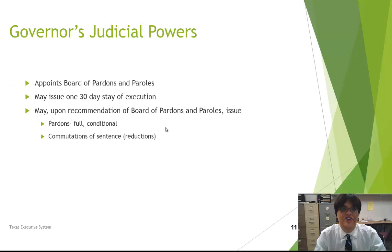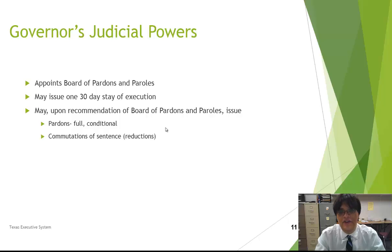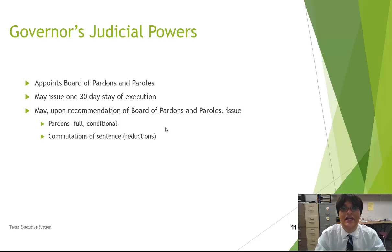Turning to judicial powers, the governor appoints the board of pardons and paroles, may issue a 30-day stay of execution, and upon recommendation of the board of pardons and paroles may issue full and conditional pardons, as well as commutations of sentence — which are reductions. A pardon means you're fully acquitted and free to go; a commutation means the sentence is reduced. The governor generally stays out of judicial politics, but can exercise these powers if necessary.